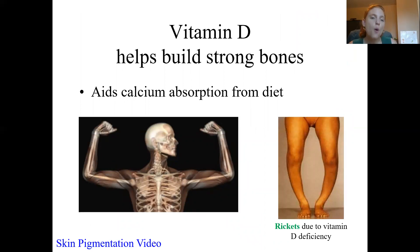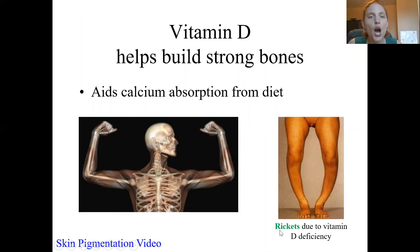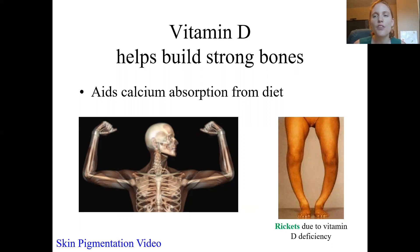Vitamin D is important because it helps deposit calcium into the bone matrix. Without enough calcium, bones grow improperly and won't be strong enough. For example, rickets is caused by a lack of vitamin D and leads to soft, spongy bones that can't properly support the weight of the body against gravity.